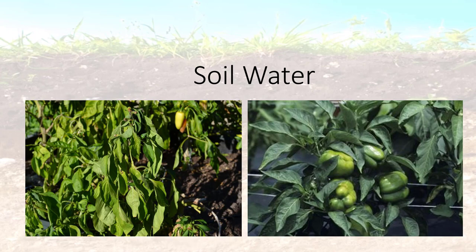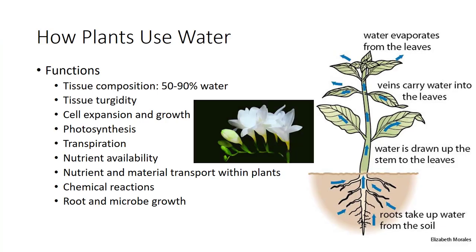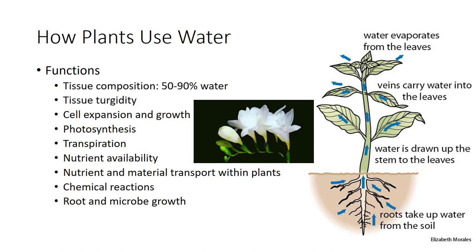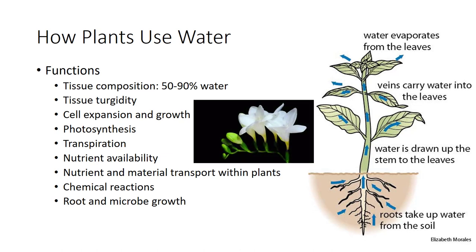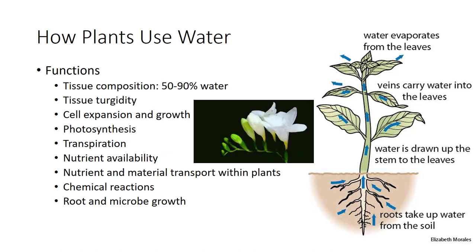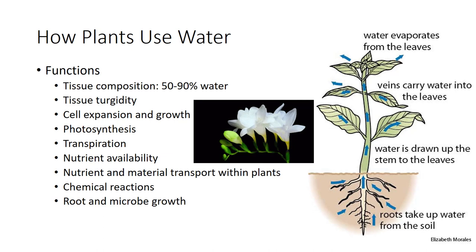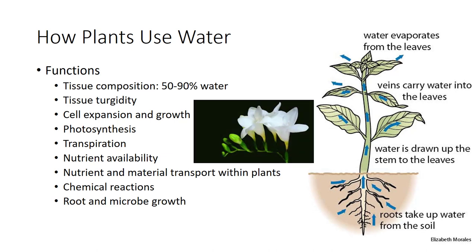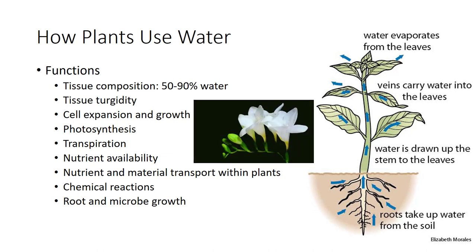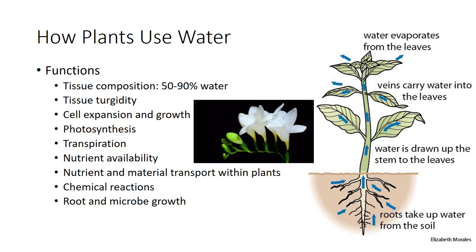On the average, plants consume 500 to 700 pounds of water to produce a single pound of dry plant matter. A single corn plant may absorb as much as 50 gallons of water during the growing season, and a tomato plant over 30.